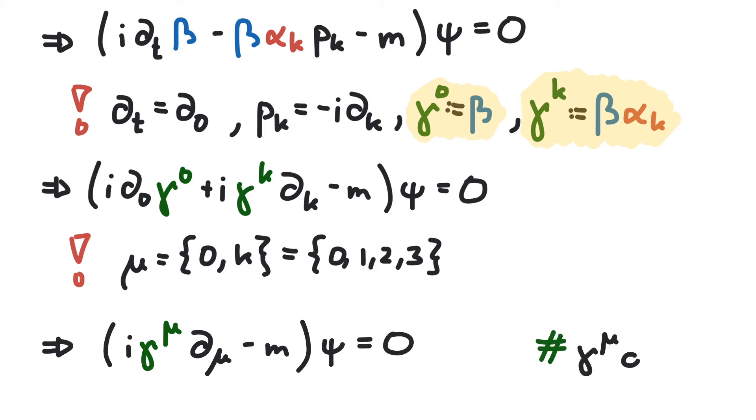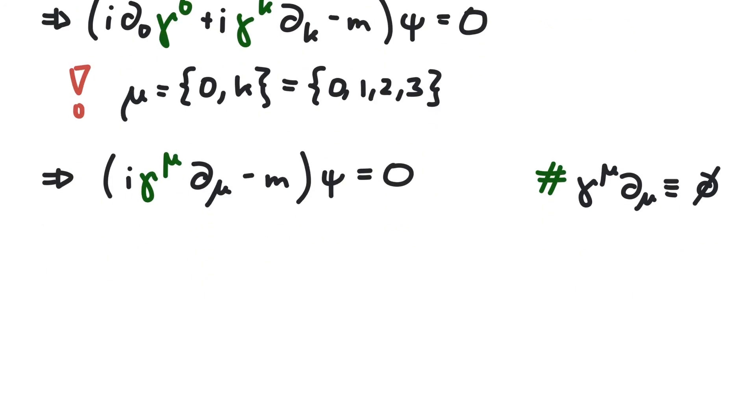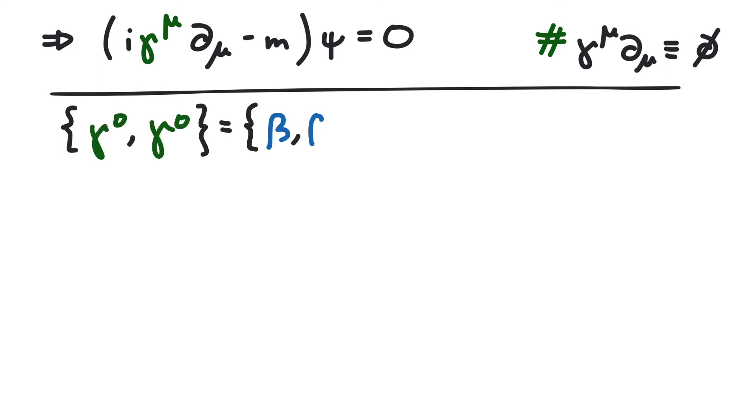It's useful to know how these new gamma matrices are related to each other. The alphas and betas had equations using anticommutators. So let's put the gamma matrices into anticommutators as well. For gamma zero with gamma zero, this is easy to do.